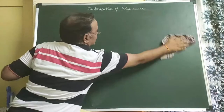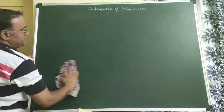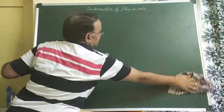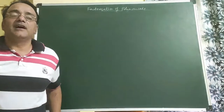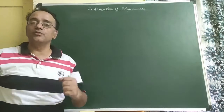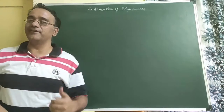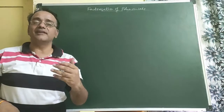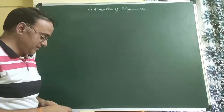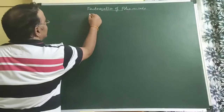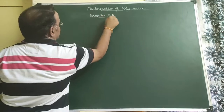Factorization of quadratic polynomials — splitting the middle term — you have already studied in Class 8, and I will take that up in the next session. Now we are going to start Exercise 2.4, Question 1. The question says: Determine which of the following polynomials has (x + 1) as a factor.